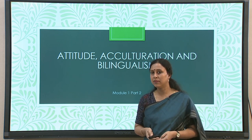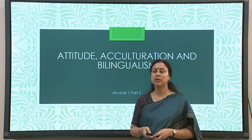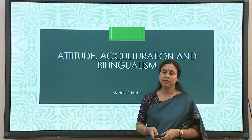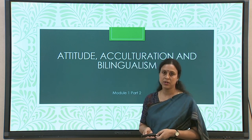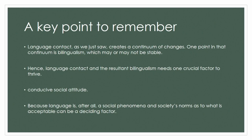On the other hand, language contact can also create a stable society with bilingualism. But at the same time, language changes might continue, with one of the outcomes being that people shift from one language to another completely, leading to language shift and gradually language loss. Basically, what we saw was that language contact creates a continuum of changes. Nothing is static whenever humans and society are concerned. Bilingualism is one point in that continuum which may or may not remain stable.